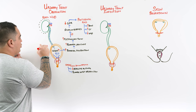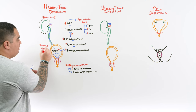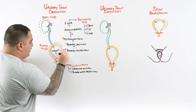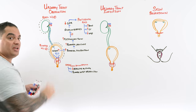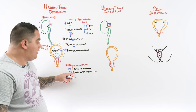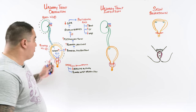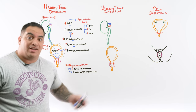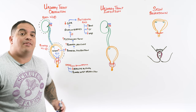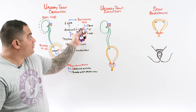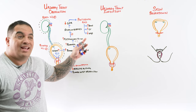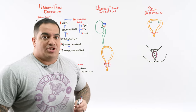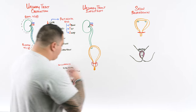On bladder ultrasound, these patients will have a very distended bladder — diagnostic of urine retention, whether from decreased detrusor activity or bladder outlet obstruction from BPH. Think about this in patients with BPH or neurogenic bladder who present with post-renal AKI, poor urine output, hydronephrosis, and a distended bladder.